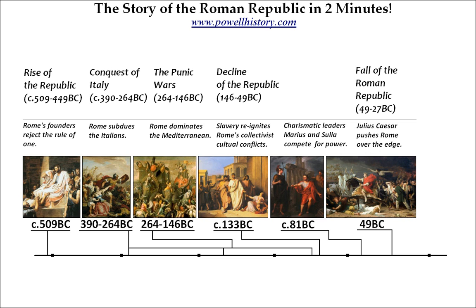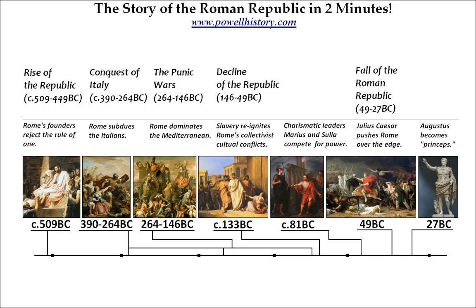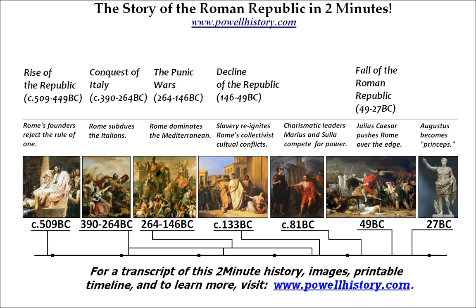Caesar failed in his bid to become emperor, but his adopted nephew Octavian would rise into the vacuum created by Caesar's assassination — the last rearguard action of Rome's republicans — and assume the status of princeps, first citizen, in truth the first Roman emperor, in 27 BC, known to history as Augustus.